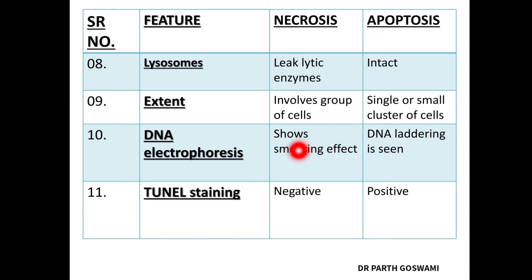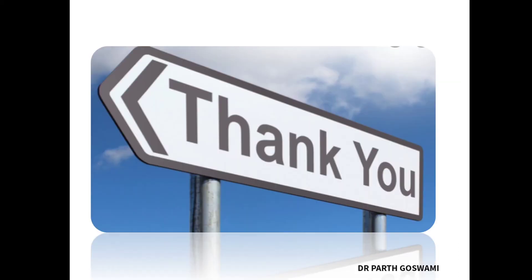If you do TUNEL staining, it will be negative in necrosis but positive in apoptosis, because of the DNA damage — specifically the nucleosome-size fragment damage — which is why TUNEL staining is positive in apoptosis.